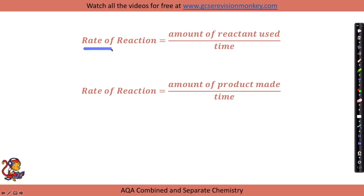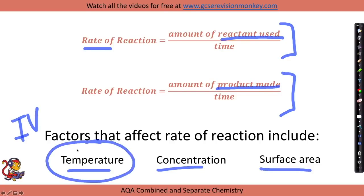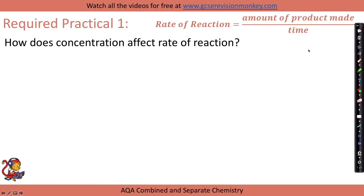For the rates of reaction required practical, there are two key equations: rate of reaction equals the amount of reactant used up over time, or the amount of product made over time. There are several factors you may be asked about that affect the rate of reaction, including temperature, concentration, and surface area. You may be designing an experiment changing any one of these as your independent variable, keeping the other two constant. Several different practical setups may come up in the exam.